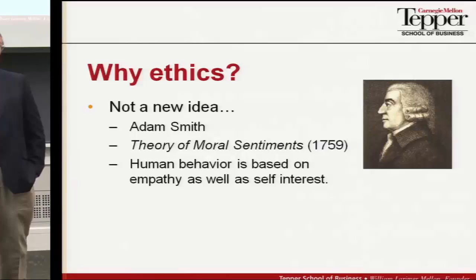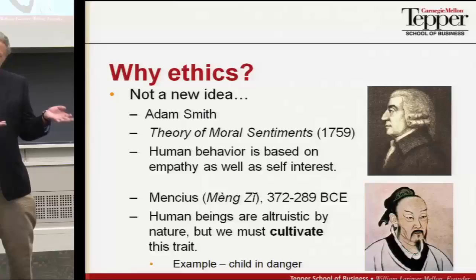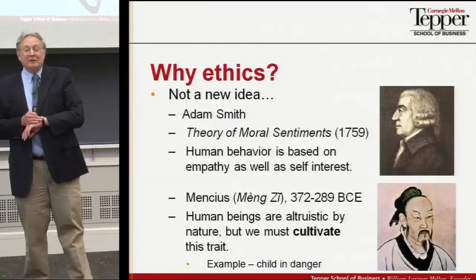This idea wasn't his either — it goes back a long way. There's this guy, Meng Tzu, or Mencius, who was a disciple of Confucius, more than 2,000 years ago. He argued that human beings are altruistic by nature. He used the following example: suppose you're walking down the street and you see a young child about to fall into a deep pit. Do you think it over and say, well, if I walk past, someone may see me ignore the child, or if I try to save the child, I may be late for my next meeting? No, you don't do that. You rush over and save the child. It's just part of who we are as human beings. That was his argument.